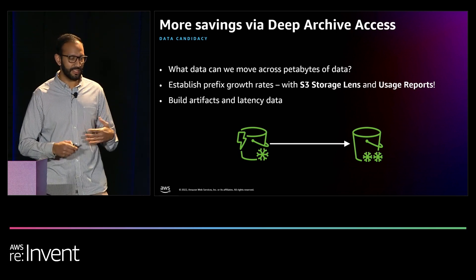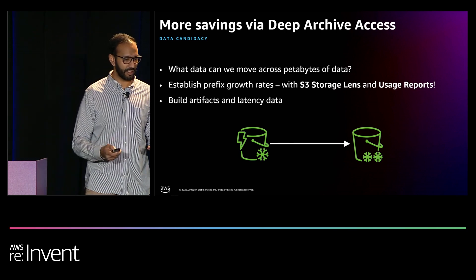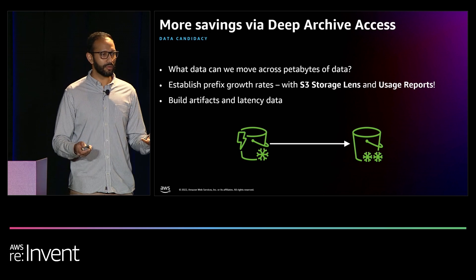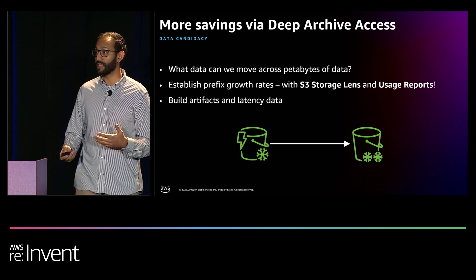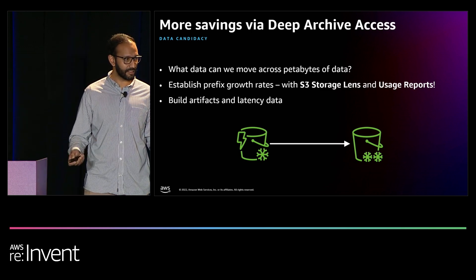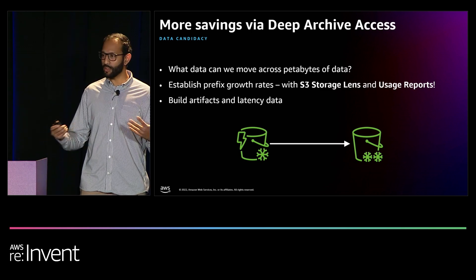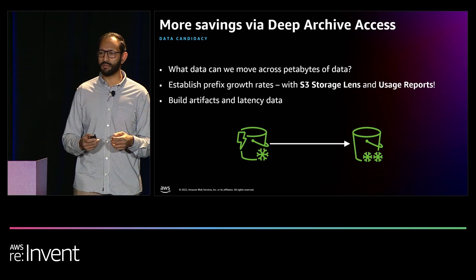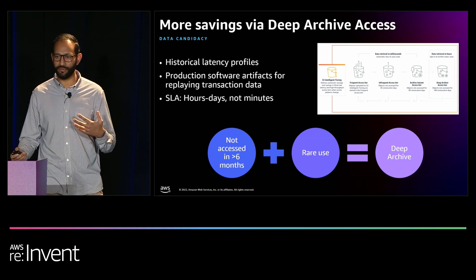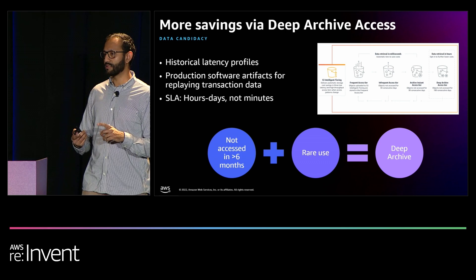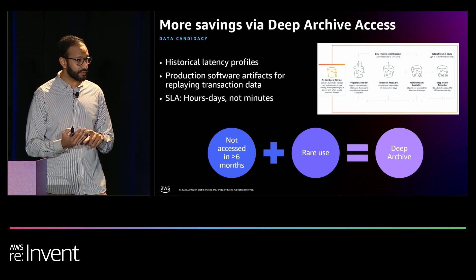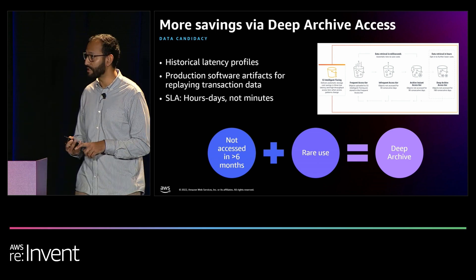So what can we actually move into deep archive access with these constraints? We wanted to figure out what part of our data is growing the most and what is costing us the most, or has the potential to start costing the most over time. Looking at S3 Storage Lens, usage reports, and access logs, we found that our build artifacts and latency data are probably the best candidates. At Stripe, we store all of our latency profiles over time so that we can validate new software going out, measure performance, and improve latency — contributing to a great user experience along with our five nines of availability.